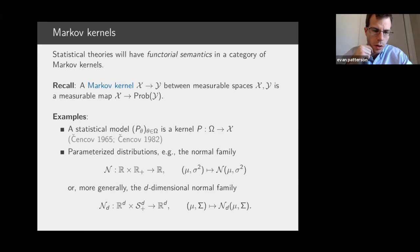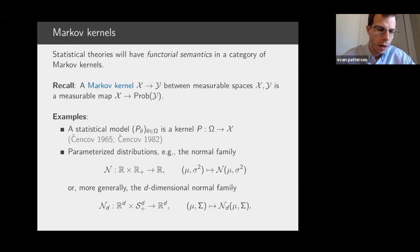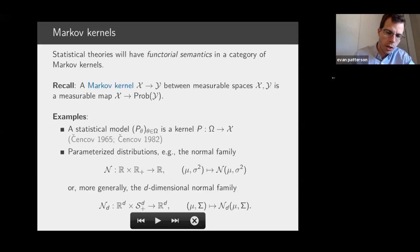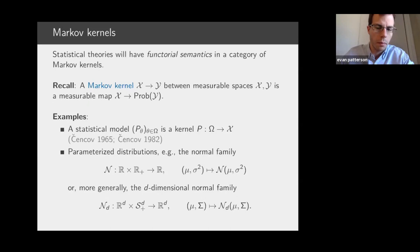Some examples of Markov kernels very relevant to this work: first, a statistical model in the classical sense, by changing viewpoint slightly, can be seen as a Markov kernel from the parameter space into the sample space — Senchov was the first to take this viewpoint seriously and develop a categorical formalism around it. In addition, essentially any parameterized family of probability distributions can be thought of as a single Markov kernel. For example, the normal distribution can be seen as a kernel mapping a mean and variance to the normal distribution having that mean and variance.